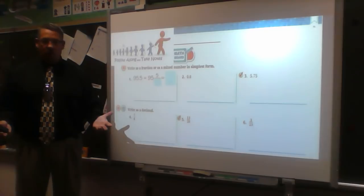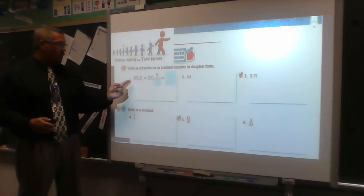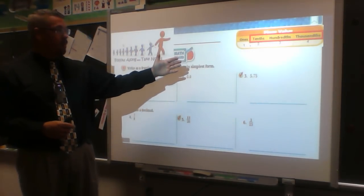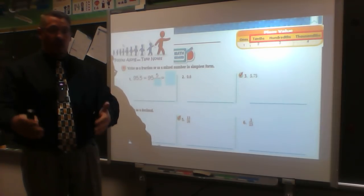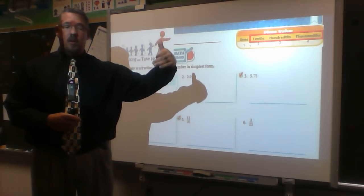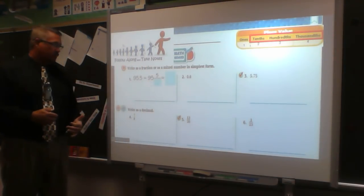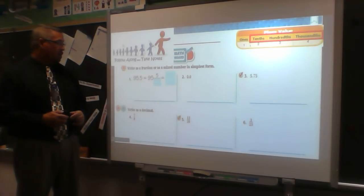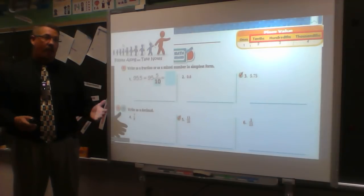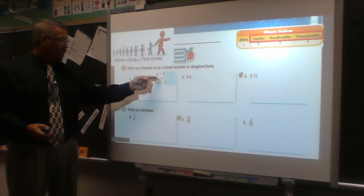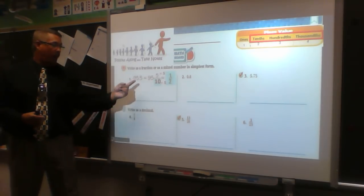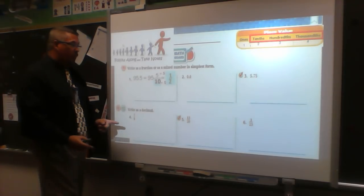When I have 0.5, if I just say '95.5' I don't know what to write as a fraction, but if I say it mathematically correctly — '95 and 5 tenths' — I know exactly. Your first decimal position is tenths, second is hundredths, third is thousandths. So '95 and 5 tenths' tells me to write 5 over 10. Then I reduce: 5 goes into 5 once and 5 goes into 10 twice, giving 95 and one half.